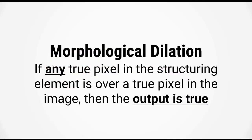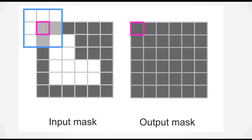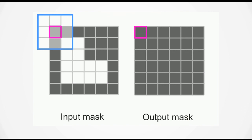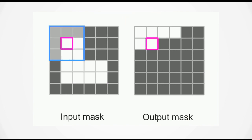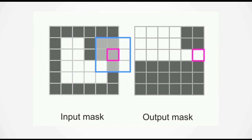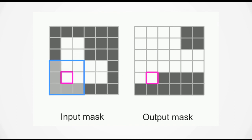Let's take a look at the second operation: morphological dilation. This operation works exactly the same way as morphological erosion, but this time we perform a slightly different comparison. In morphological dilation, if any true pixel in the structuring element is over a true pixel in the input image, then the output will be true. So with the structuring element at the top left pixel, the output pixel will be true. This process repeats across the entire image and we end up with an output mask that is similar to the input mask but larger — dilation makes things larger.